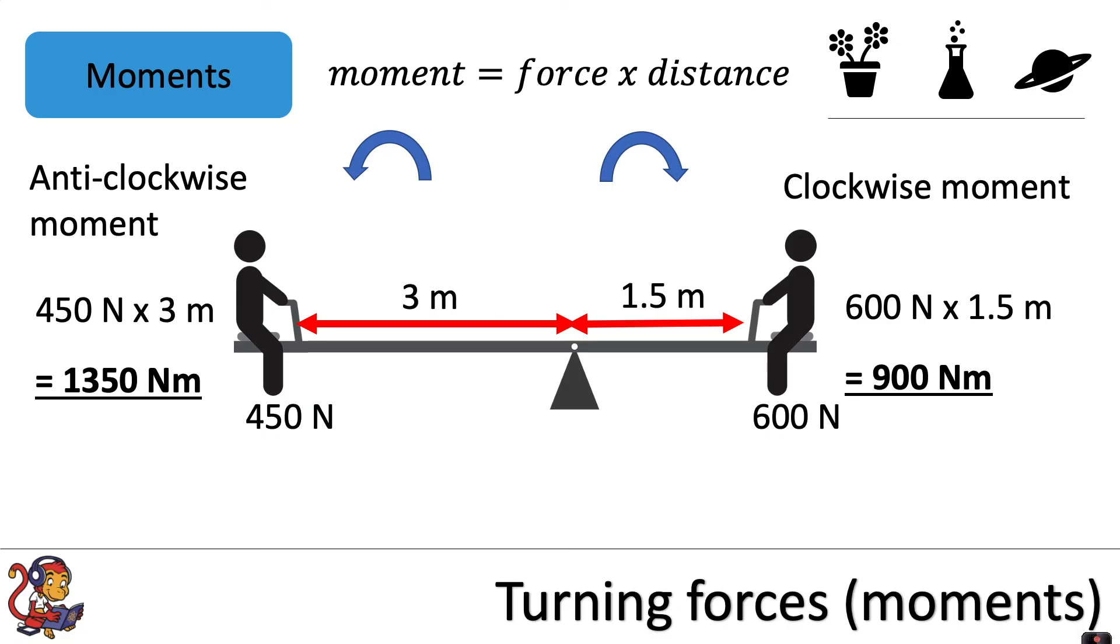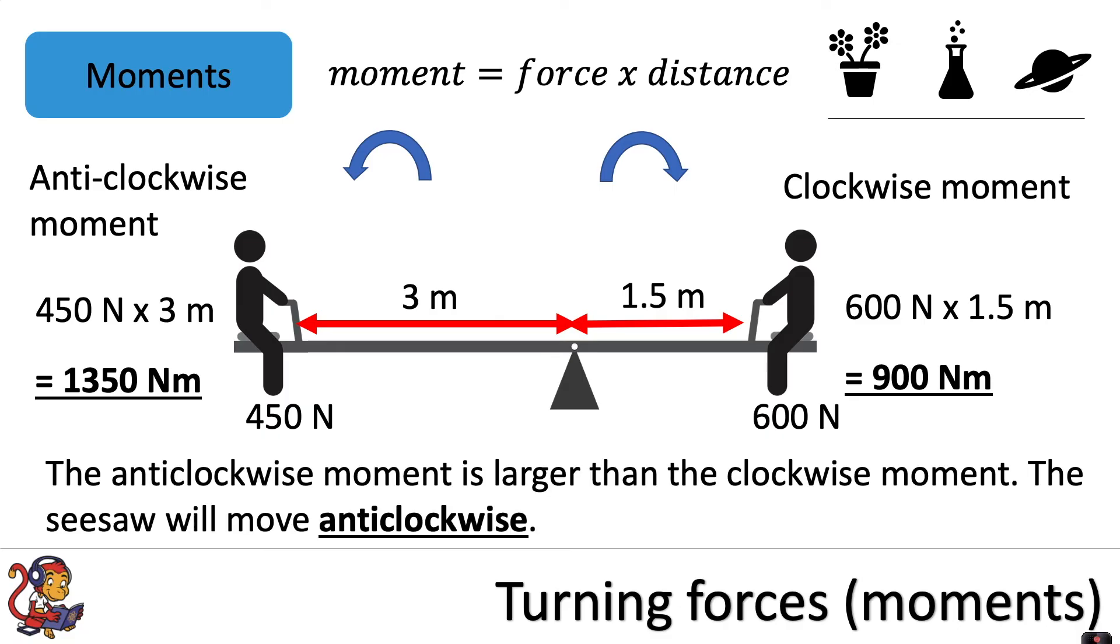Again, in this system, the anti-clockwise moment is larger than the clockwise moment. The seesaw will move anti-clockwise. This person would go down, and this person would move upwards.